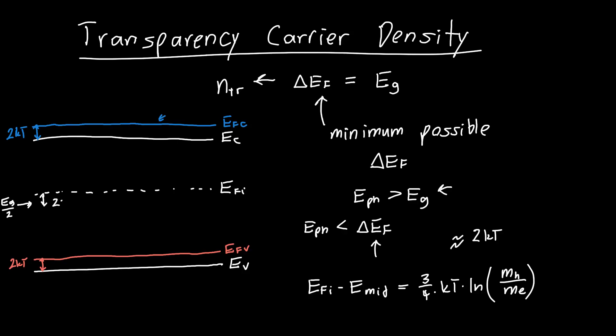So 2 times kT, where kT is just our thermal energy. And now our Fermi level splitting, delta EF, is equal to EG.